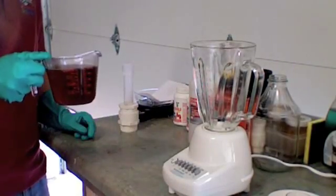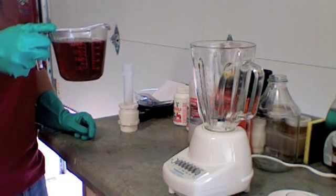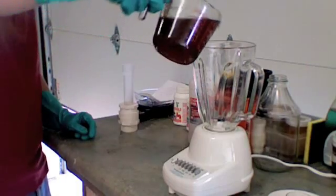For this batch, we're making a half a liter. So take your glass measuring cup, measure out five hundred milliliters of your waste vegetable oil you want to make a small batch of. Pour it in your blender.